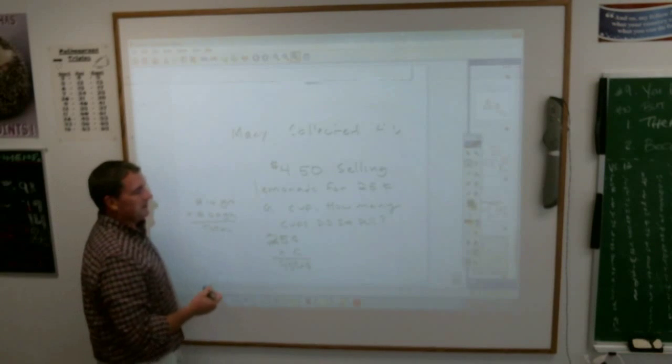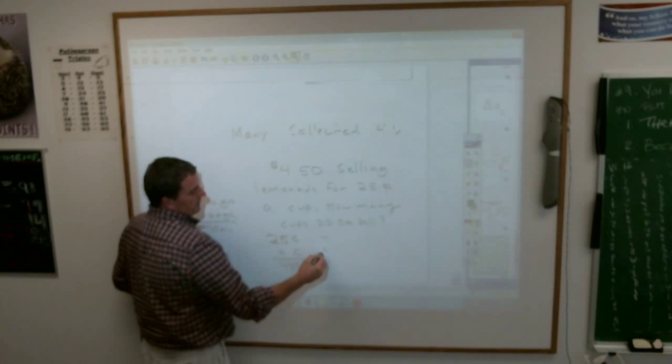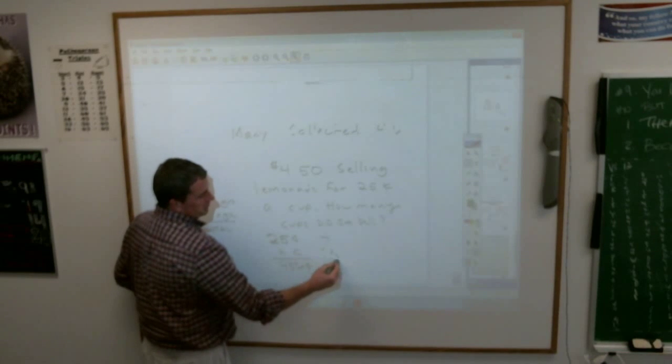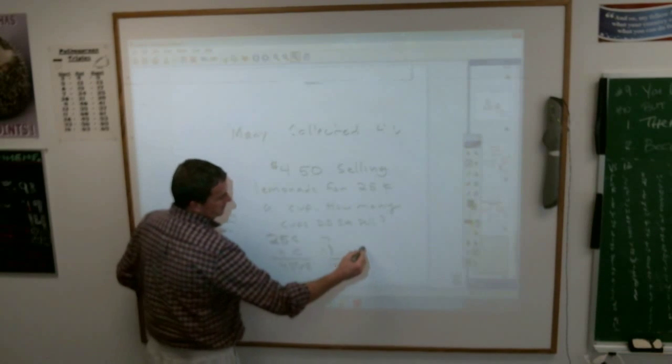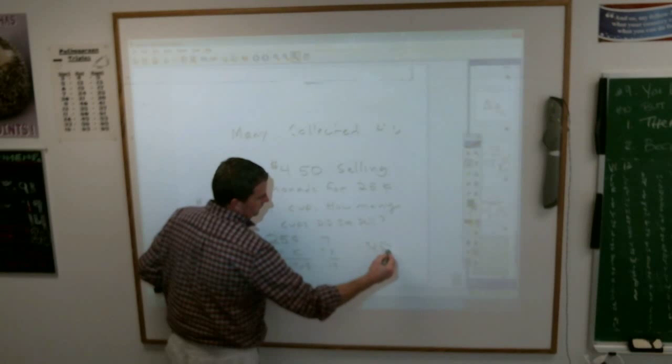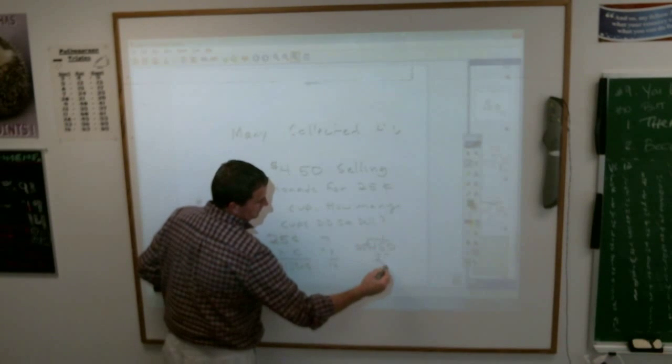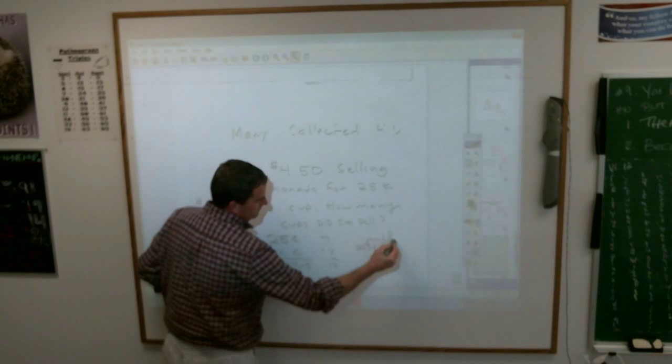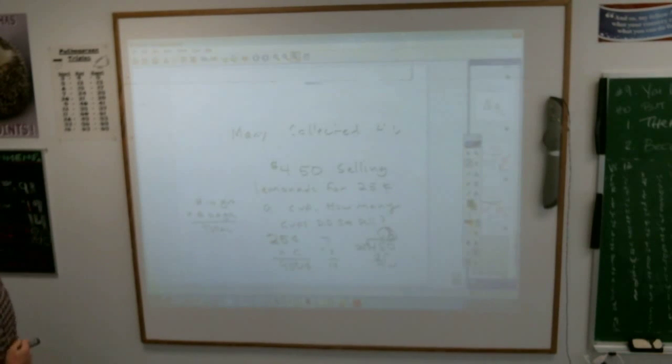So again, this is just like that other problem. If you're missing the middle one on a multiplication problem, 7 times 2 is 14. If I'm missing the middle, what happens? I have to divide those two, so 450 cents divided by 25 is, what, 18, I hope. 18 cups.